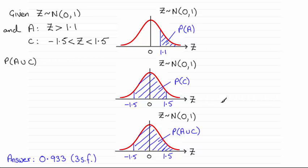So what we've got here then is the probability of A union C is exactly the same as working out the probability of Z being greater than minus 1.5.